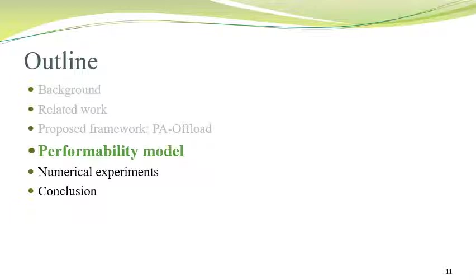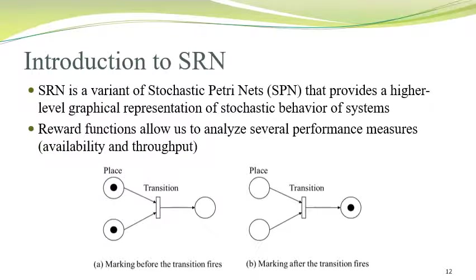The problem is how to compute the performability from the environmental uncertainty. In order to compute it, we introduce the performability model. Our performability model is based on SRN — Stochastic Reward Net — which is a variant of stochastic Petri nets that provides a higher-level graphical representation of stochastic behavioral systems. A special feature of SRN is a reward function that allows us to analyze several performance measures.